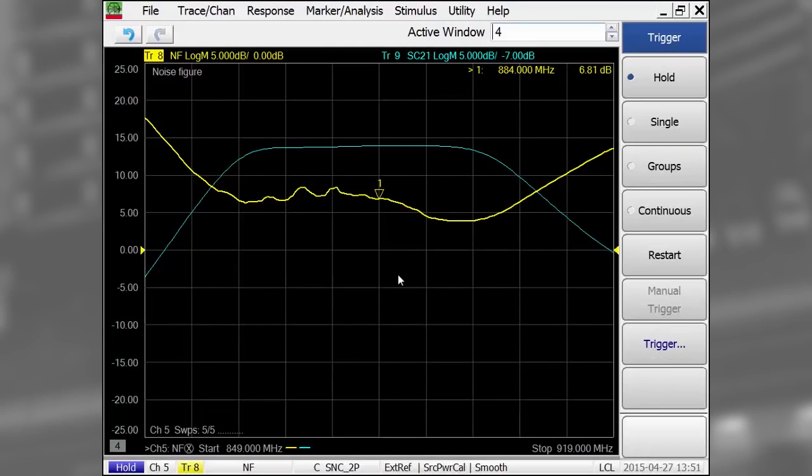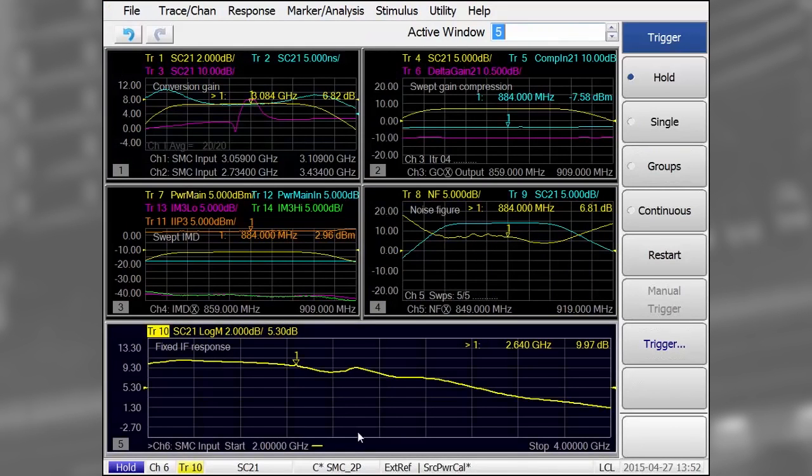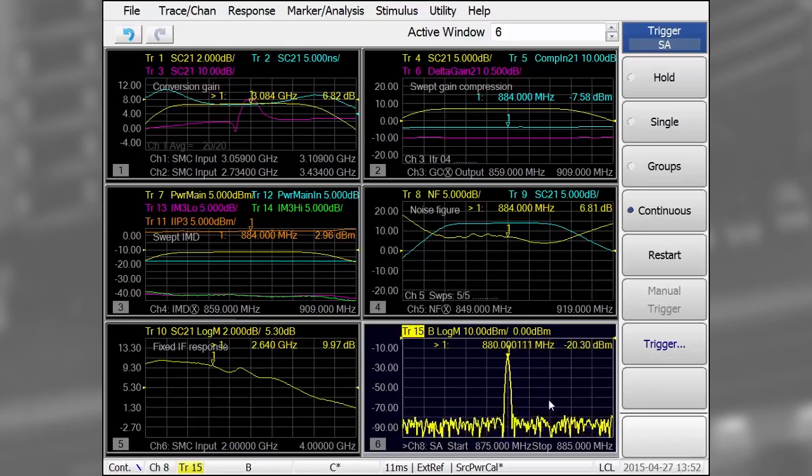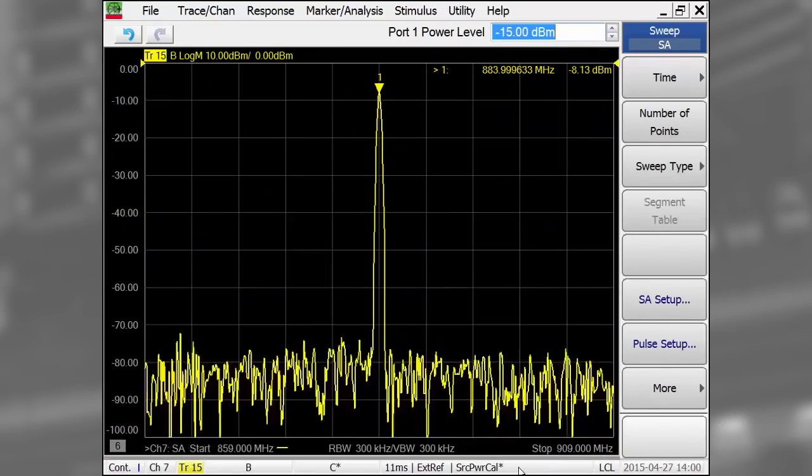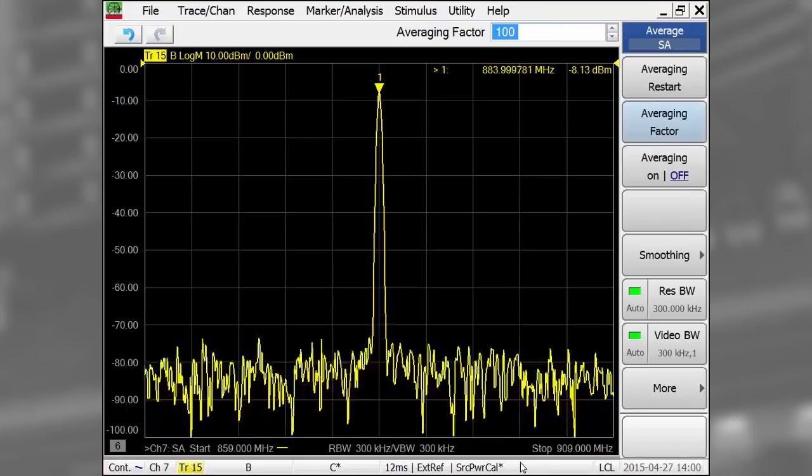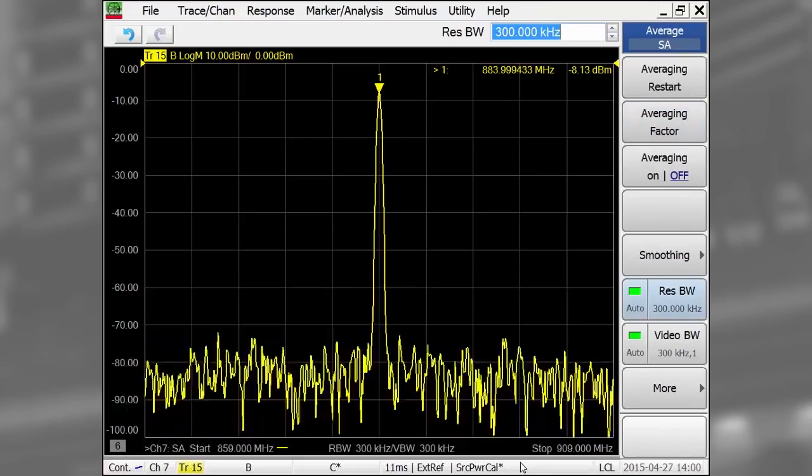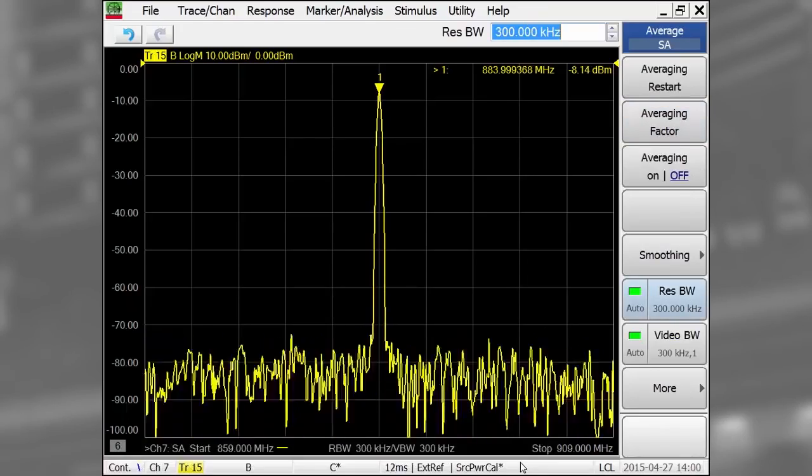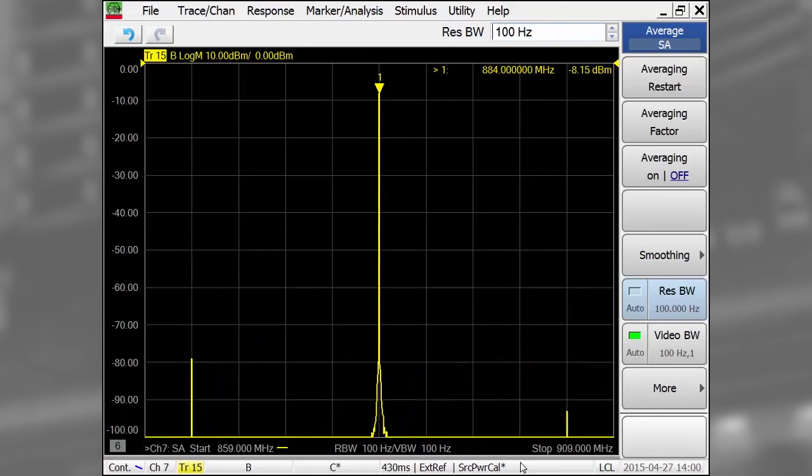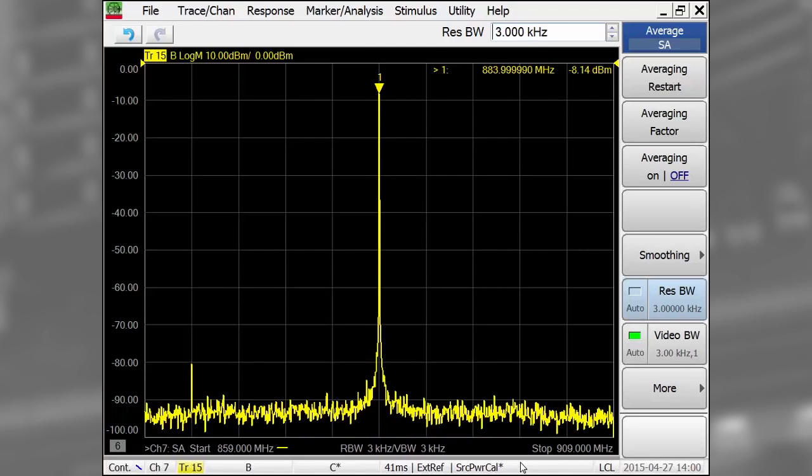Taking advantage of a feature called marker-to-SA, I can place a marker in the pass band of the converter and open a spectrum analyzer channel that has the same stimulus conditions as those used in the noise figure channel. Now we see the output signal at 880 MHz with a 50 MHz span. Notice as I decrease the resolution bandwidth setting, I can maintain excellent sweep speed while improving measurement sensitivity.